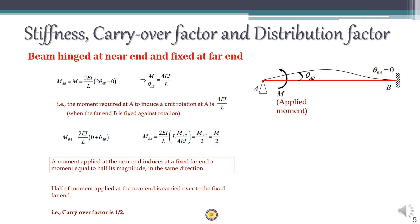Now consider another beam where the far end is fixed and the near end has a moment applied. M_AB equals M, and from the deflected shape theta_BA equals zero since B is a fixed end. Substituting theta_BA equals zero into the slope deflection equation gives M_AB equals 4EI/L times theta_AB, so the stiffness at the near end is 4EI/L when the far end is fixed.